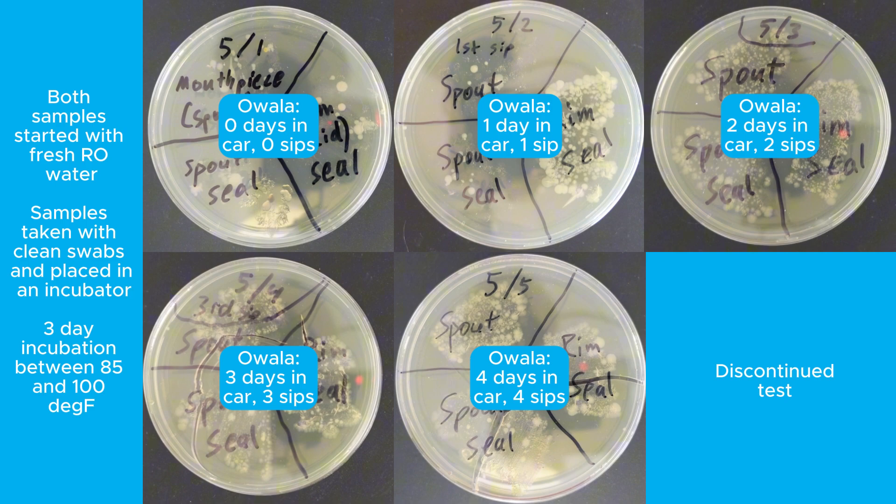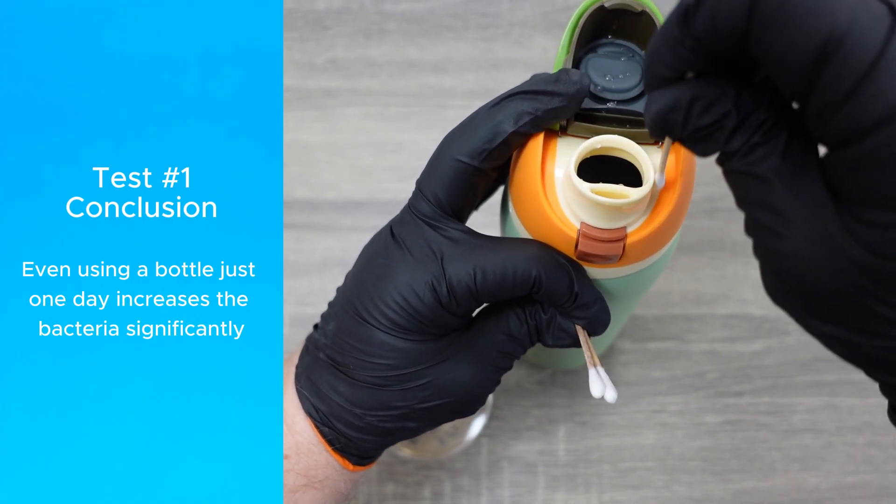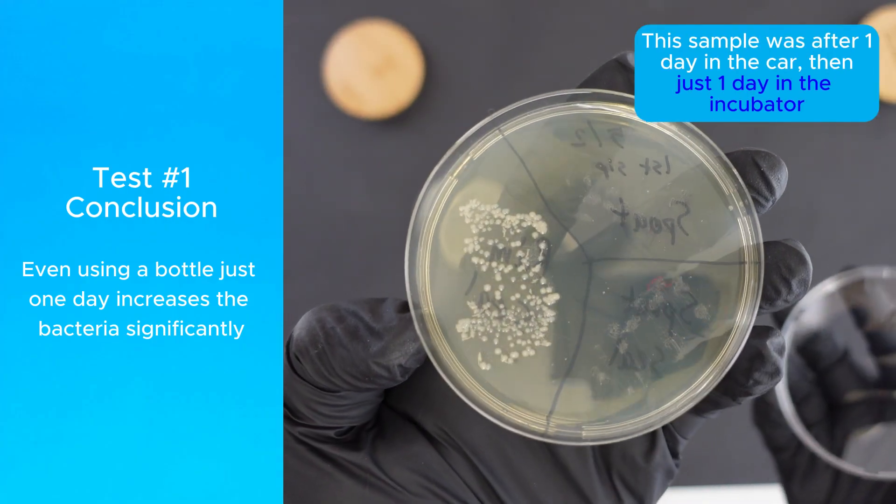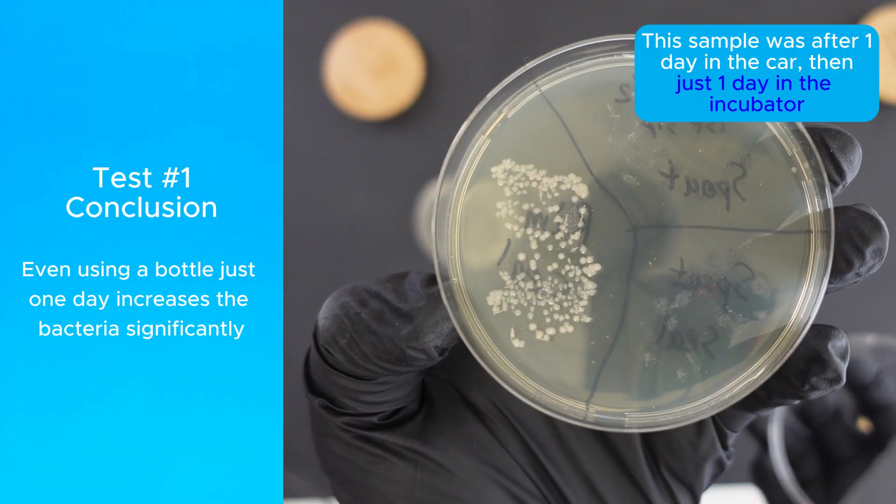And to really hammer home the point about the smell, it was atrocious. It was certainly a lot worse than the petri dish where the bacterial growth was accelerated and concentrated, but the bottle was terrible too. Overall, this test shows that it doesn't take long for bacteria to start growing on all parts of your bottle, which is why you should clean it regularly and often.